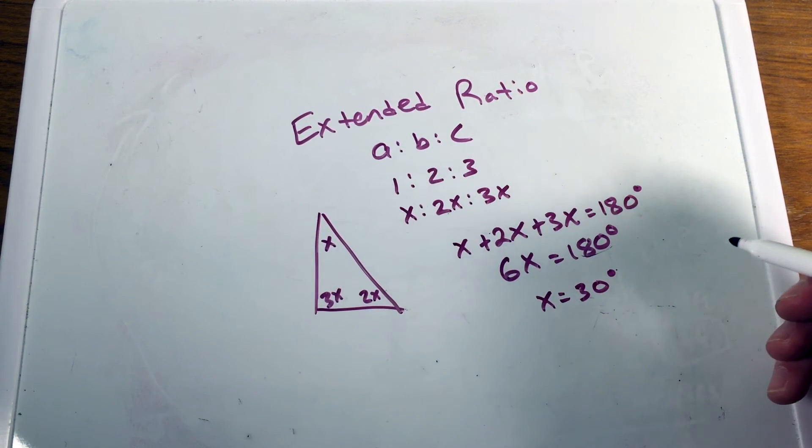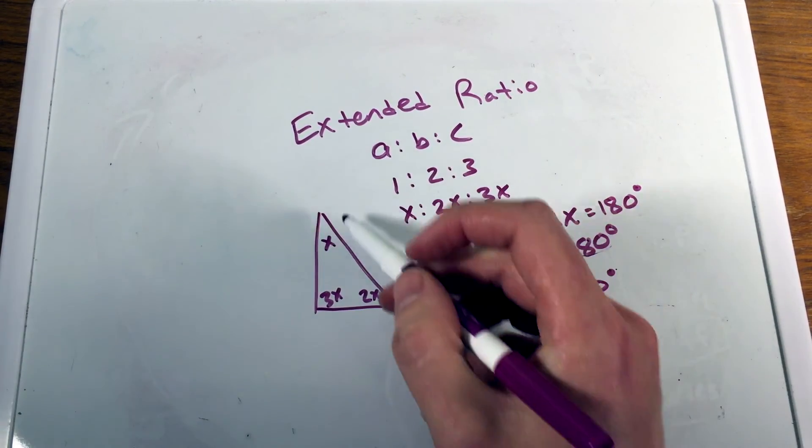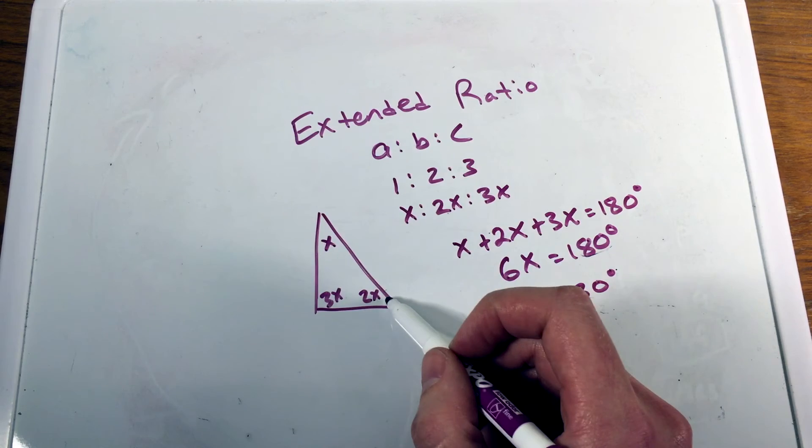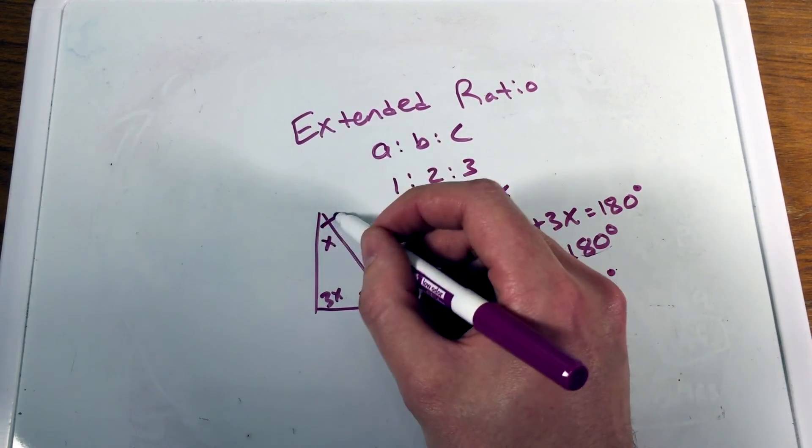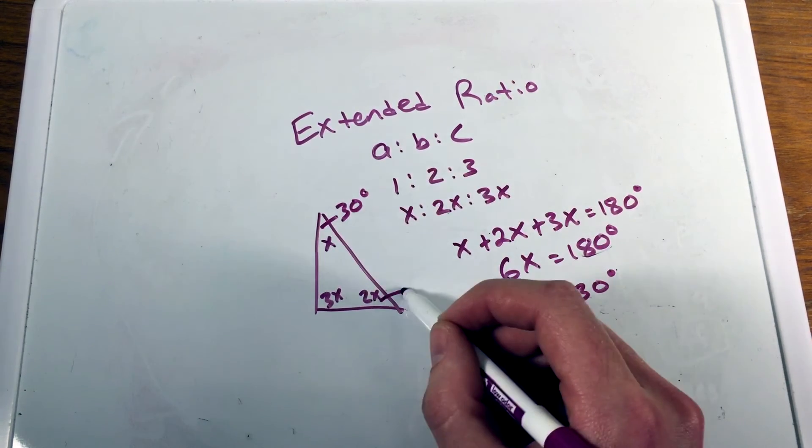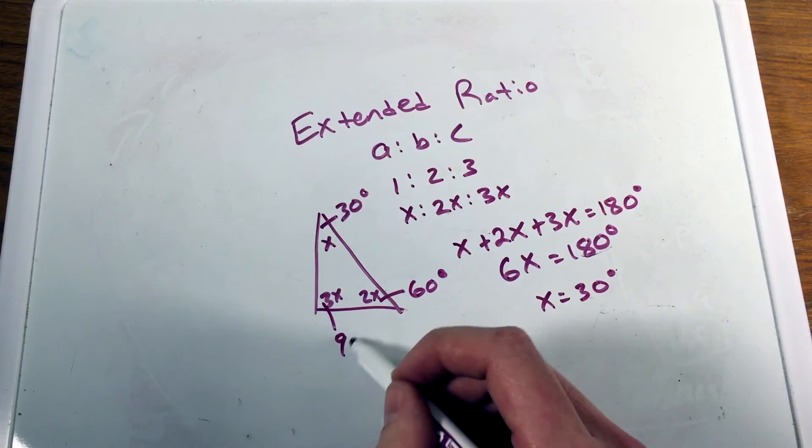So if X equals 30 degrees, we now can fill in our values here and we see that this value here is 30 degrees, this one's 60 and this one's 90, and we have a 30, 60, 90 triangle. So this one here is 30 degrees, this one here ends up being 60 degrees, and this last one here means a right angle of 90 degrees.